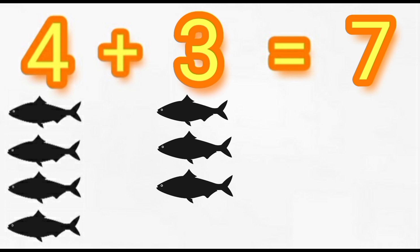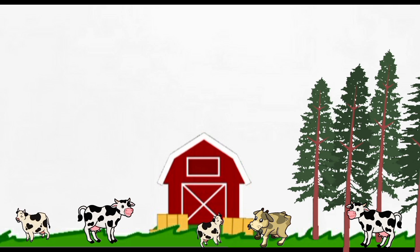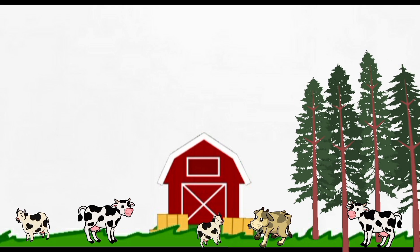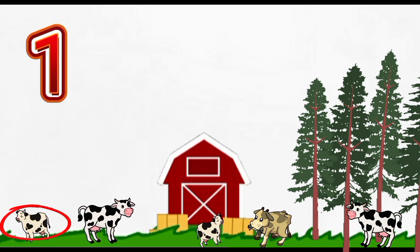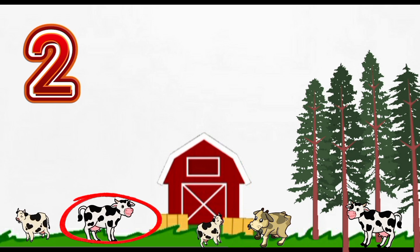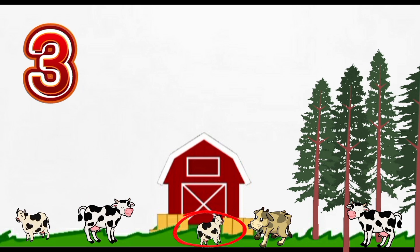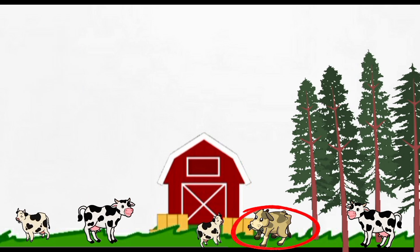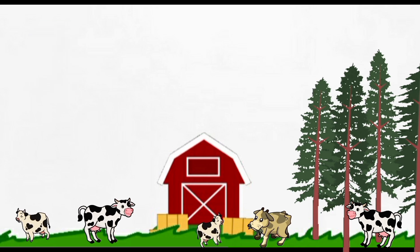Let's try one more together to make sure you've got the process down. What could we count first? Let's count the cows together. One. Two. Three. Four. And five. So our first number we'll be adding together is five.